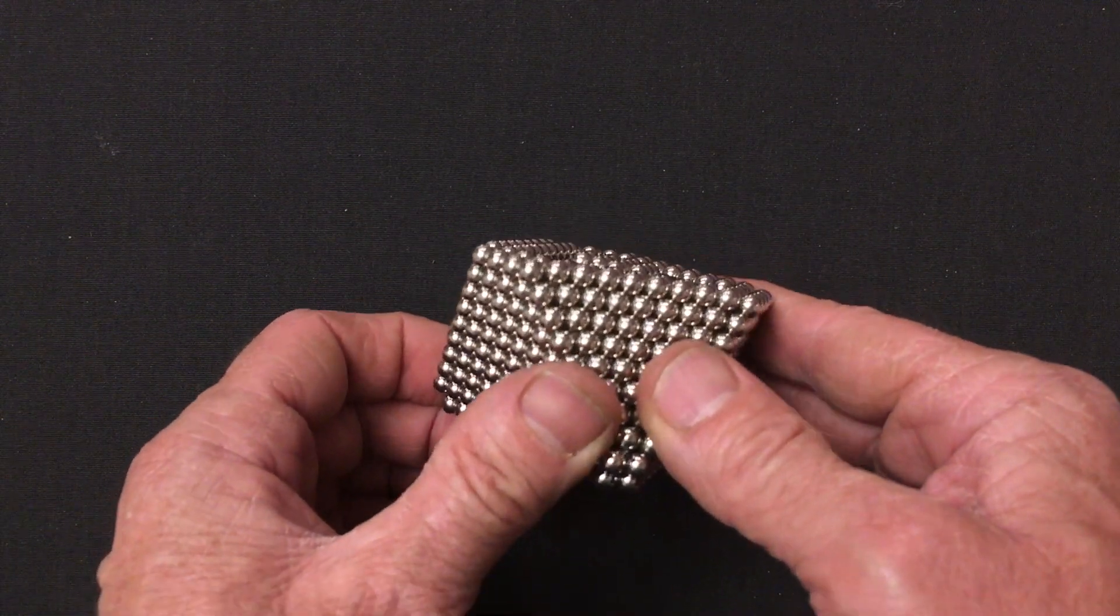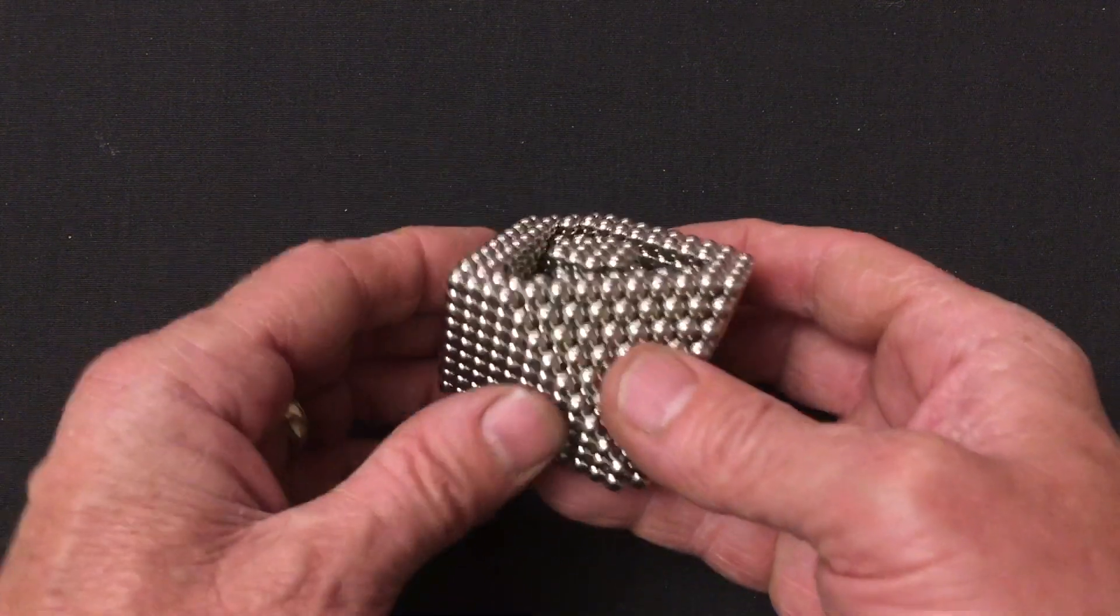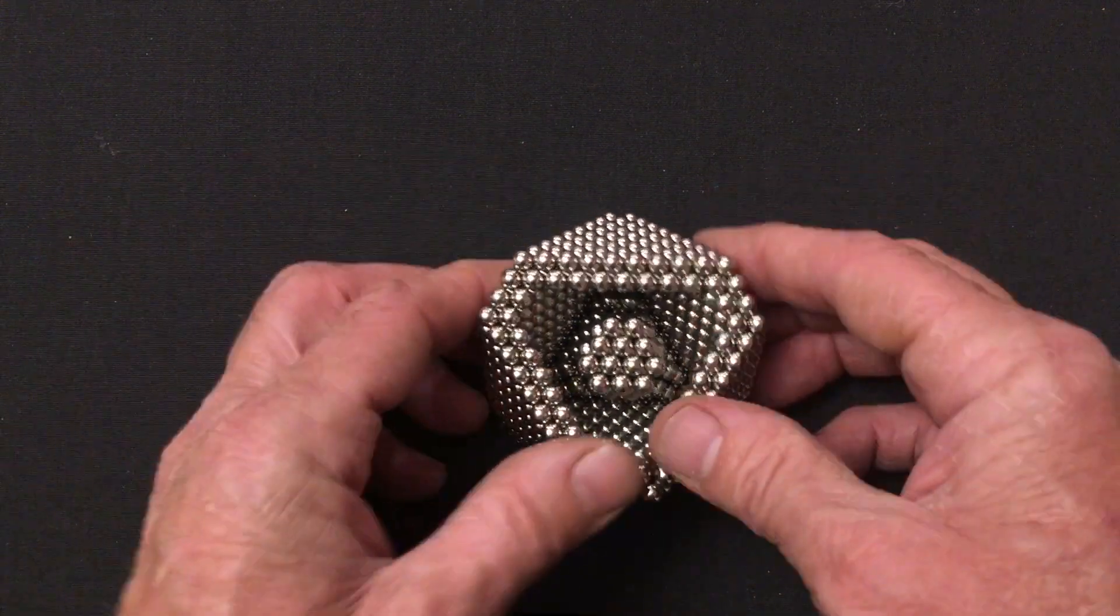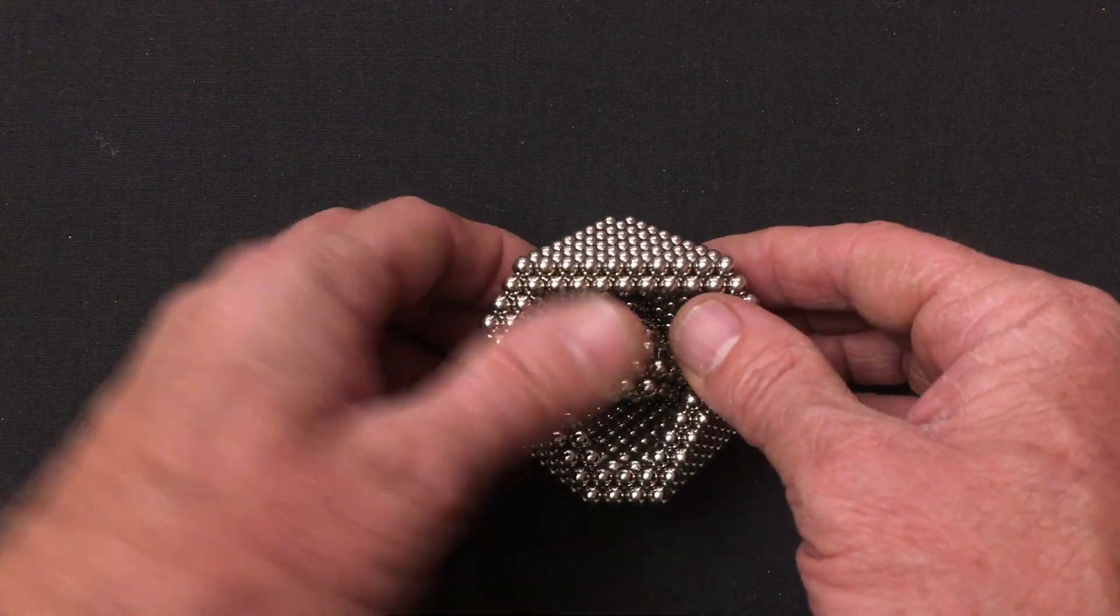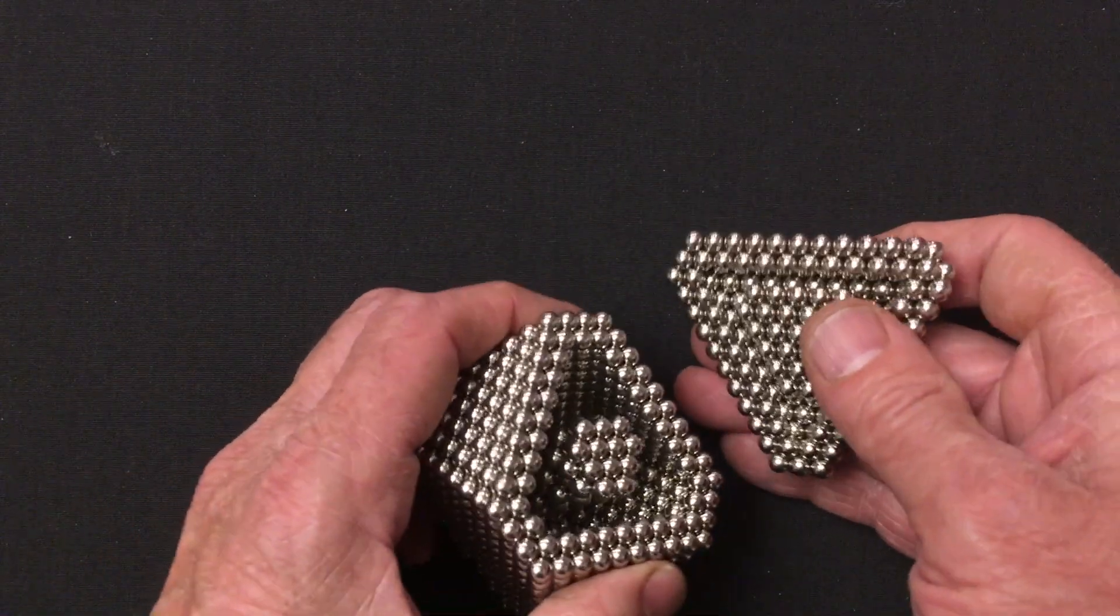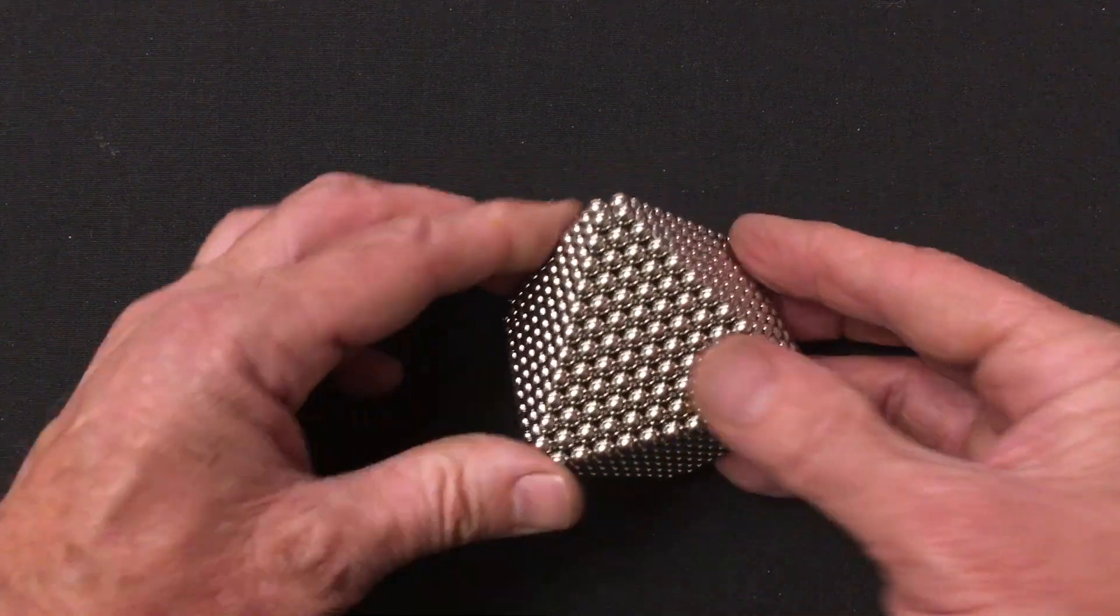Okay, as you can see now, we've added layers until we've reached the top of the column. And so now all we have to do is add the top, and we're almost done. So here's the top, I'm going to match these up, and then snap the top into place, and there you go.